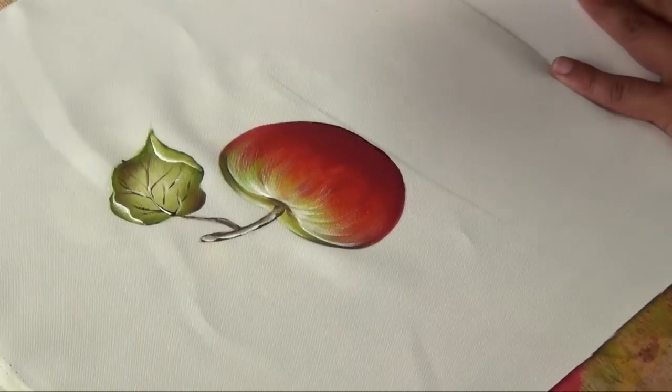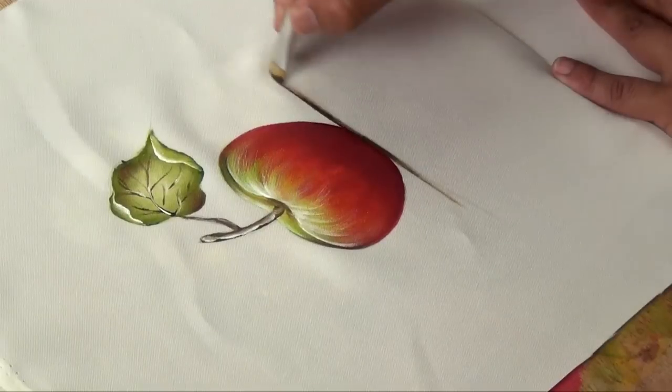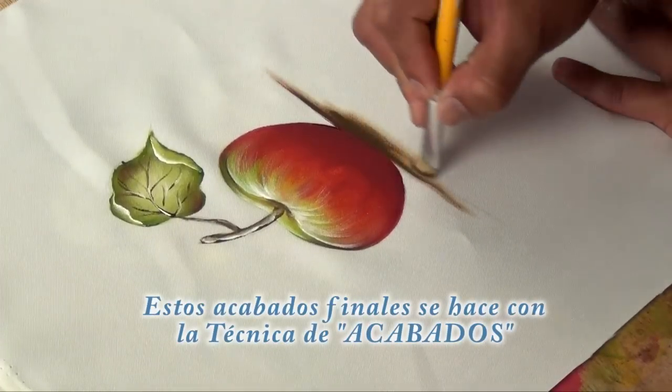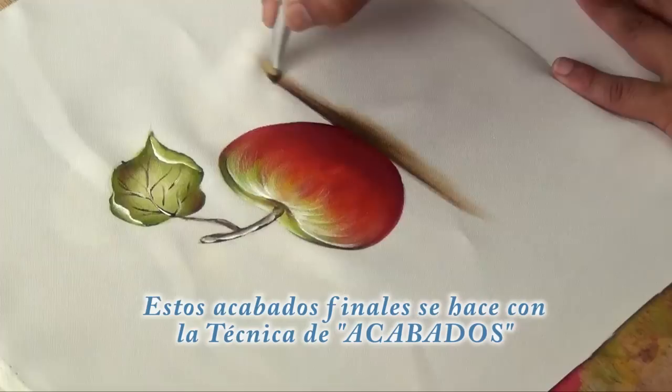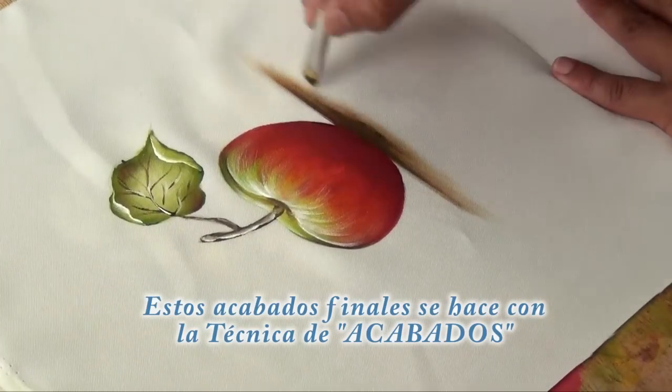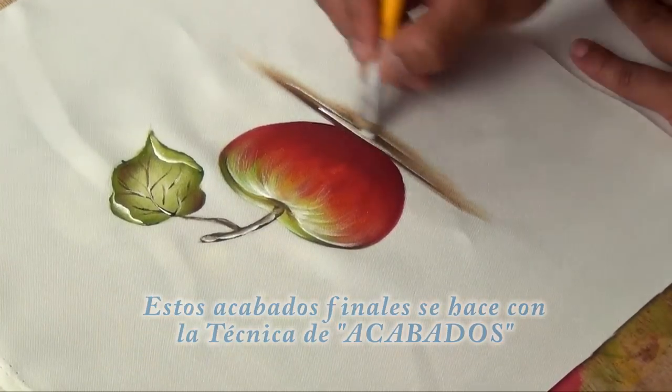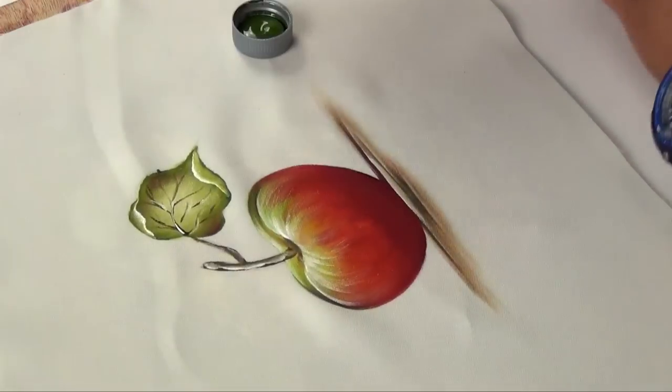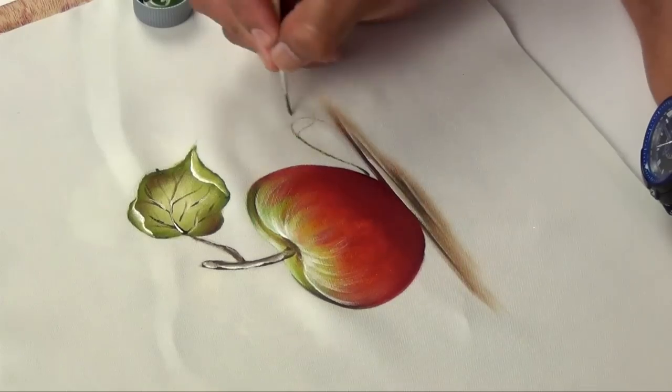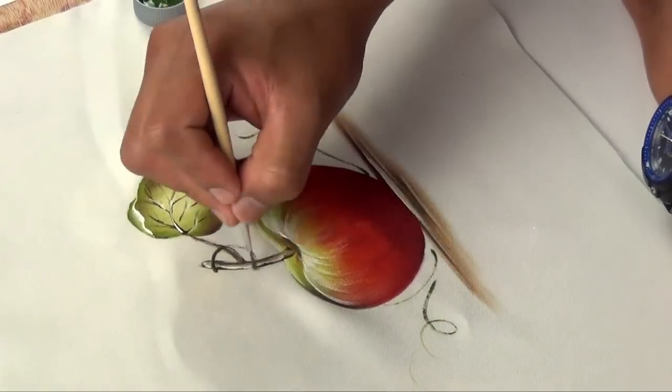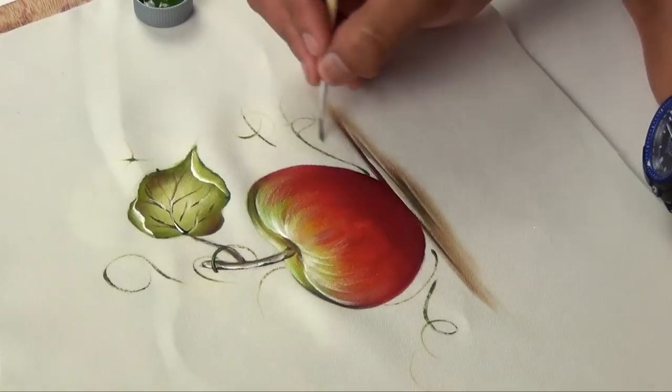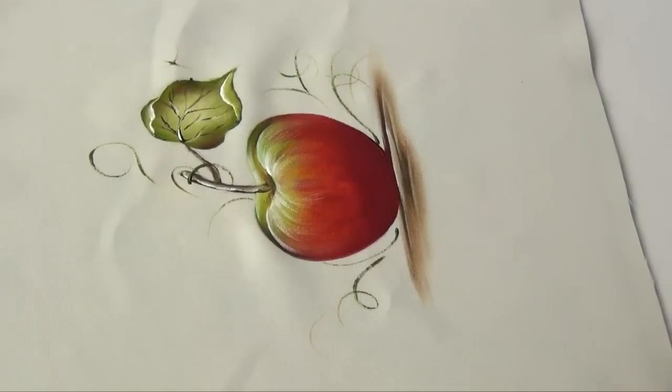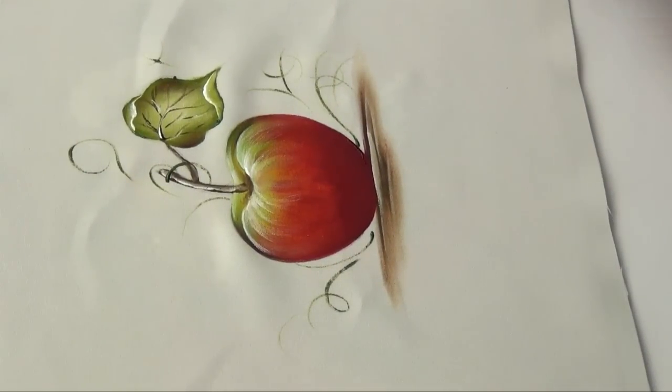With sepia we'll add a base so the apple doesn't appear floating in the air, a soft base. Final finish, some small arabesques to give a background to the apple. And as you see, there we have the apple finished, completed. And that's it, the apple.